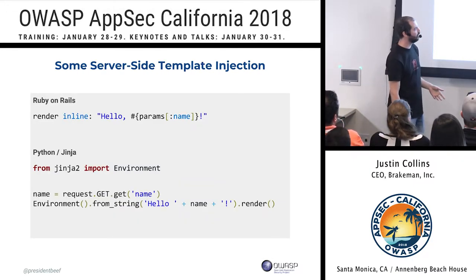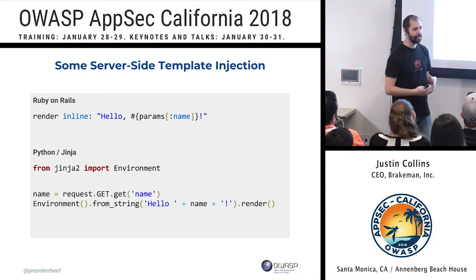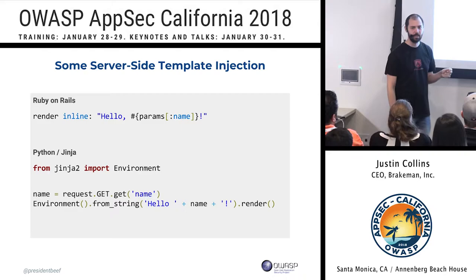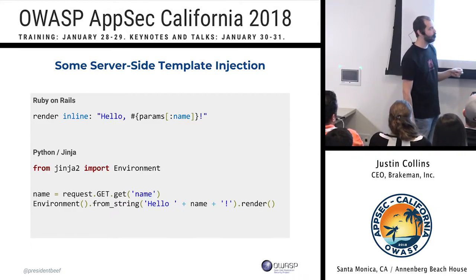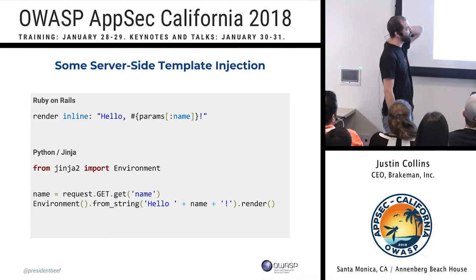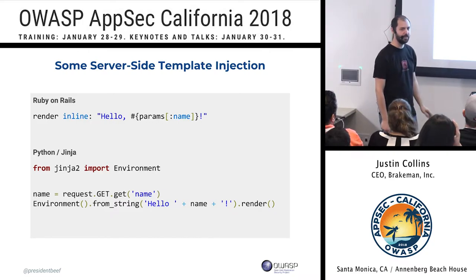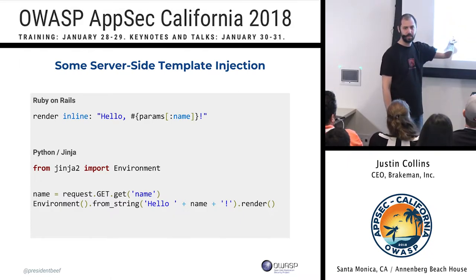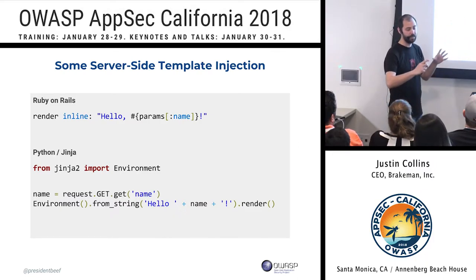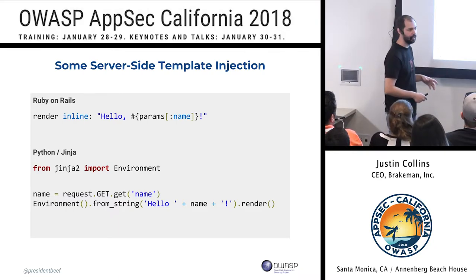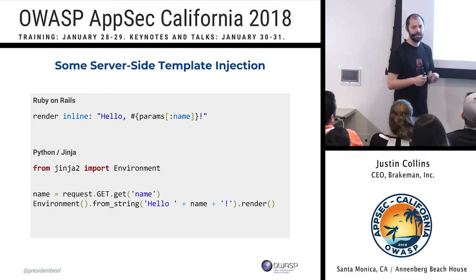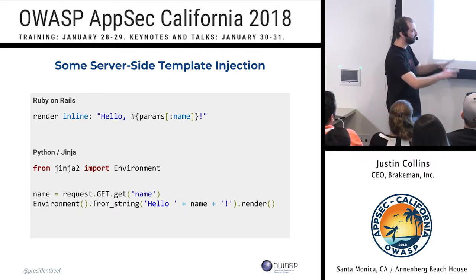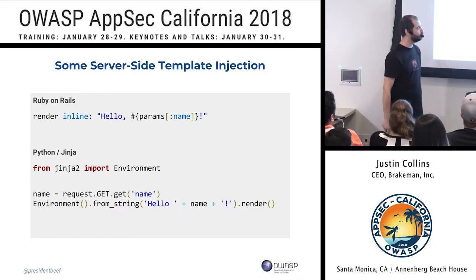Here we're building more strings — this time we're building templates we're going to execute. If you caught Jason's talk yesterday, server-side template injection is becoming more popular among bug bounty researchers. The Rails example at the top is actually very sneaky — when you do 'render inline', it treats it as your default templating library, which would allow you to put in essentially any Ruby code and execute it on the server. From 'I'm building a template' we now have remote code execution.